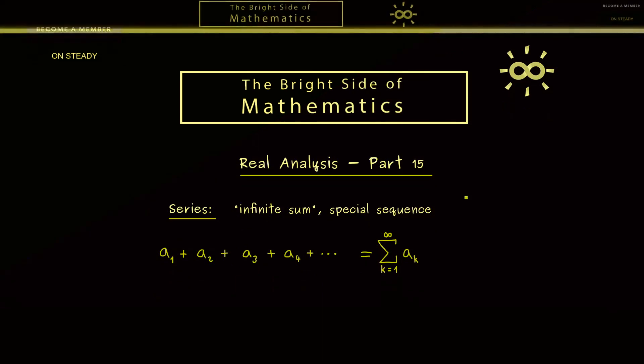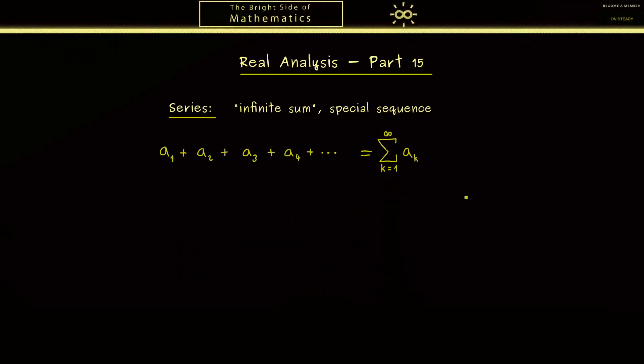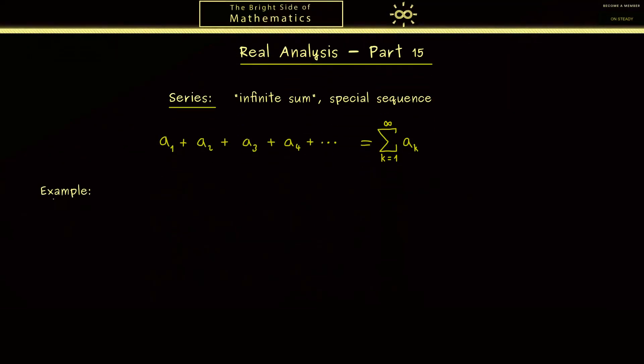So you see this is not so complicated so let's immediately look at an example. The only thing we need here is a sequence aₖ of real numbers. Therefore let's take one we already know which is (-1)^k. So this is a well defined sequence however not a convergent one. Nevertheless we still could ask what is the infinite sum of this sequence.